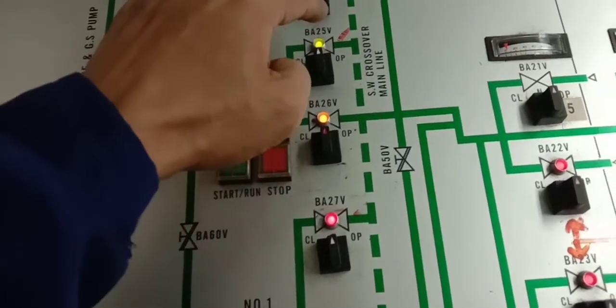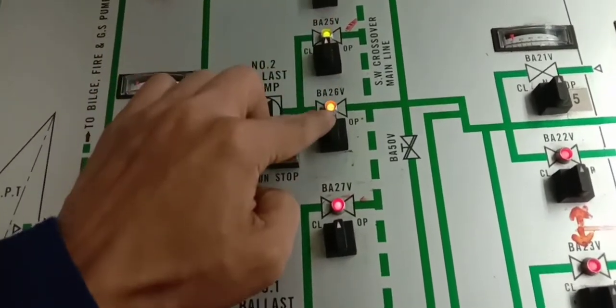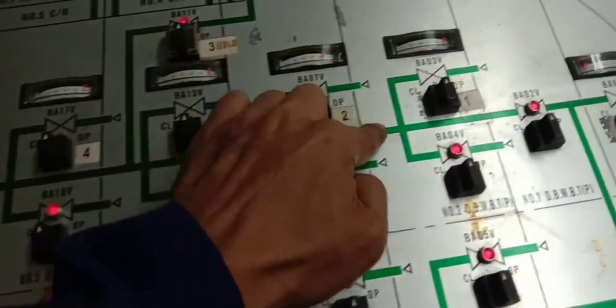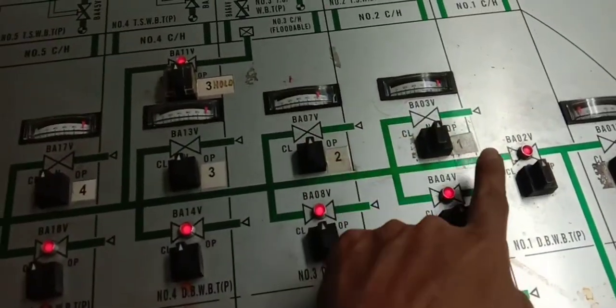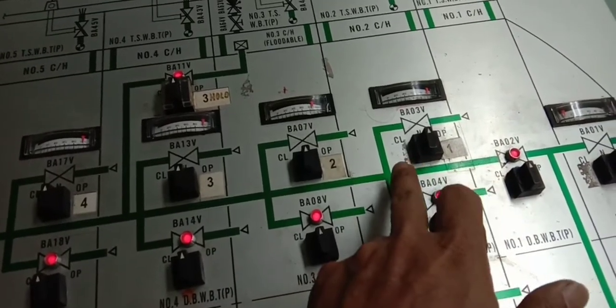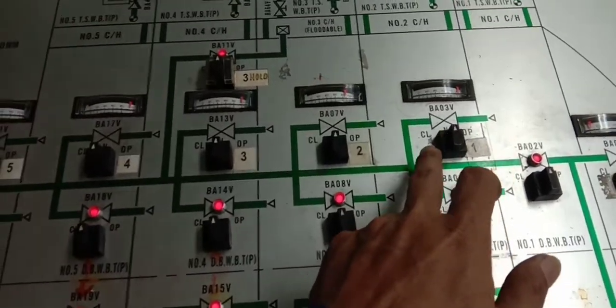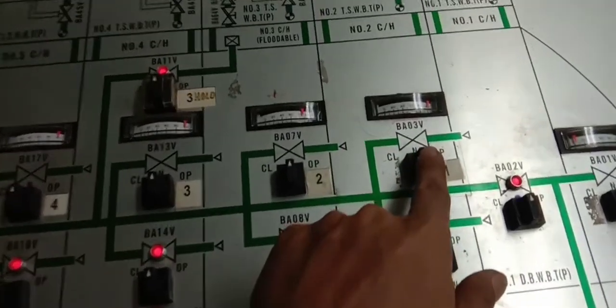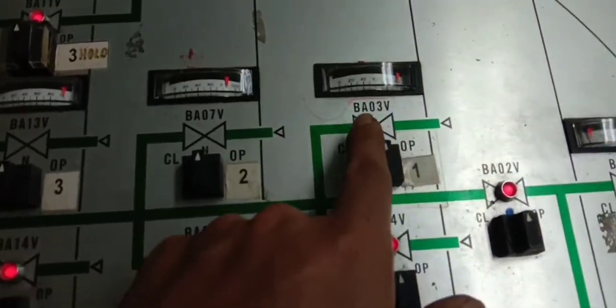With these valves open, water will pass to the main line. Now, what tanks or DBT you decide, open one by one. Open these valves. This valve is already open.